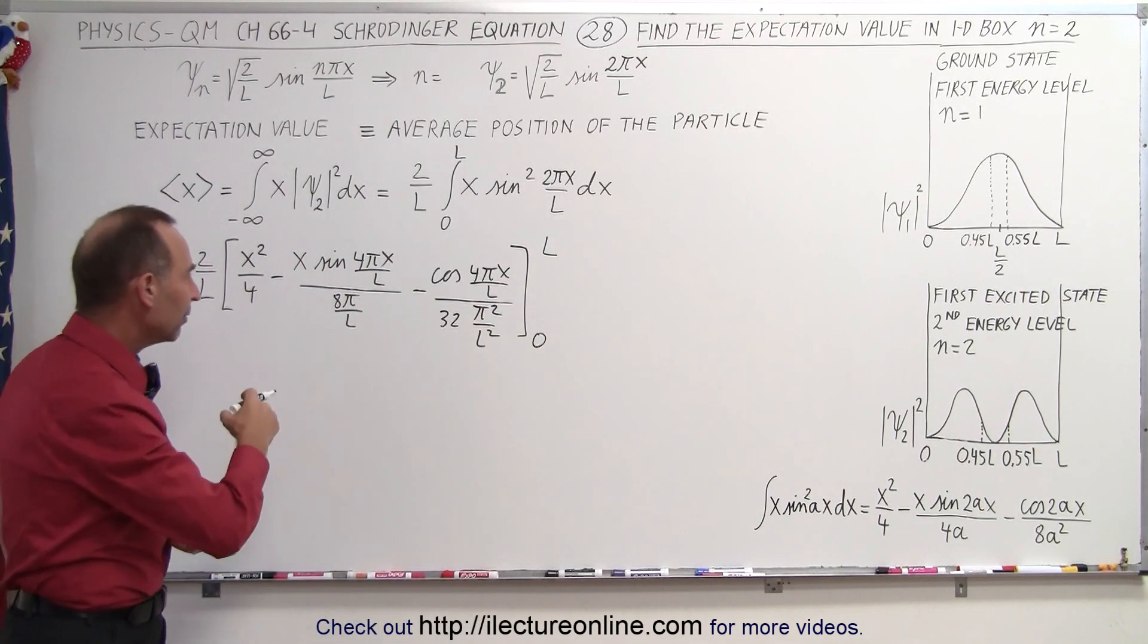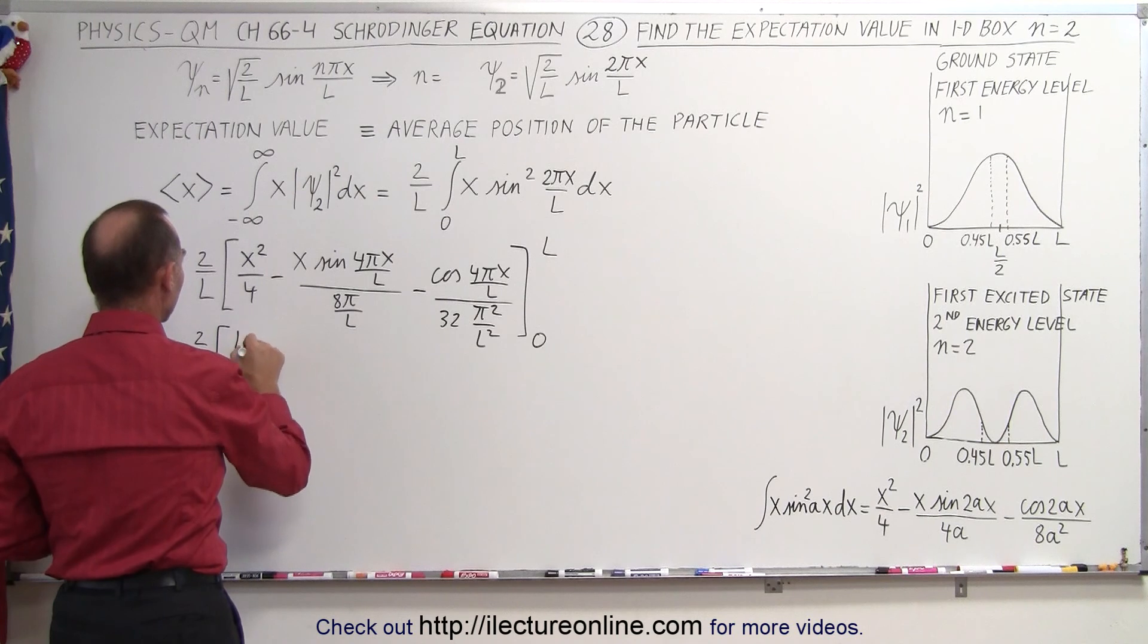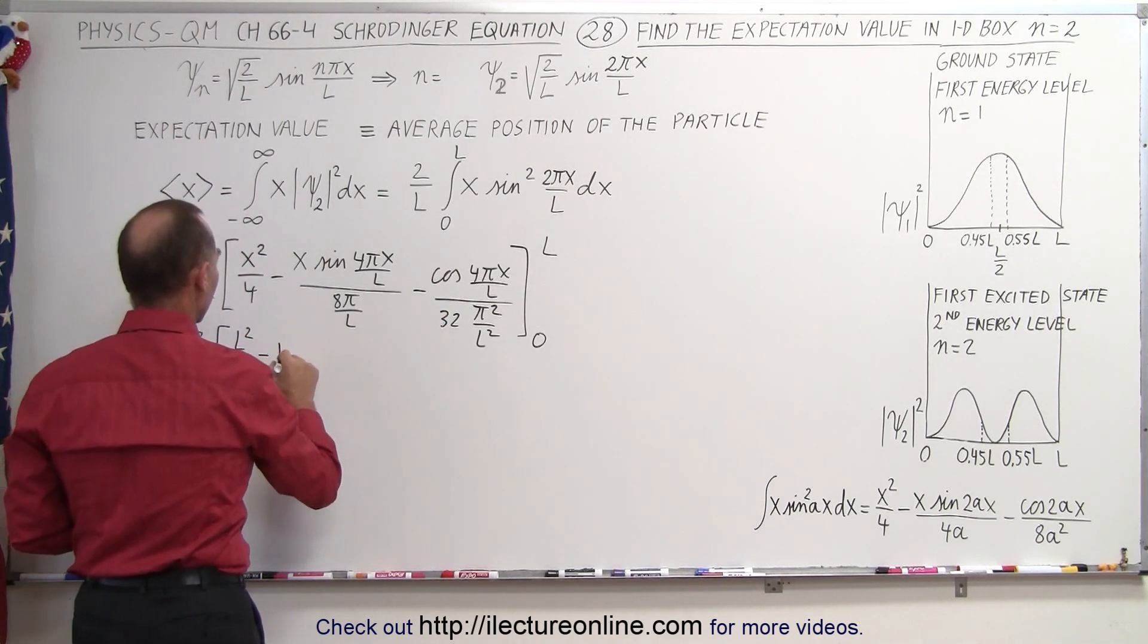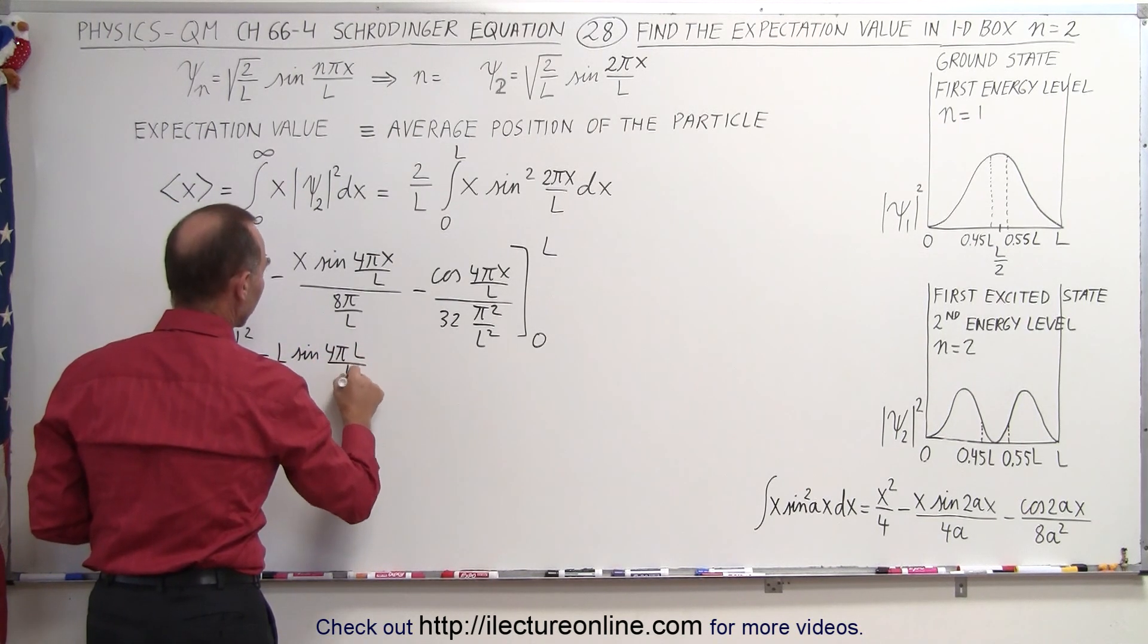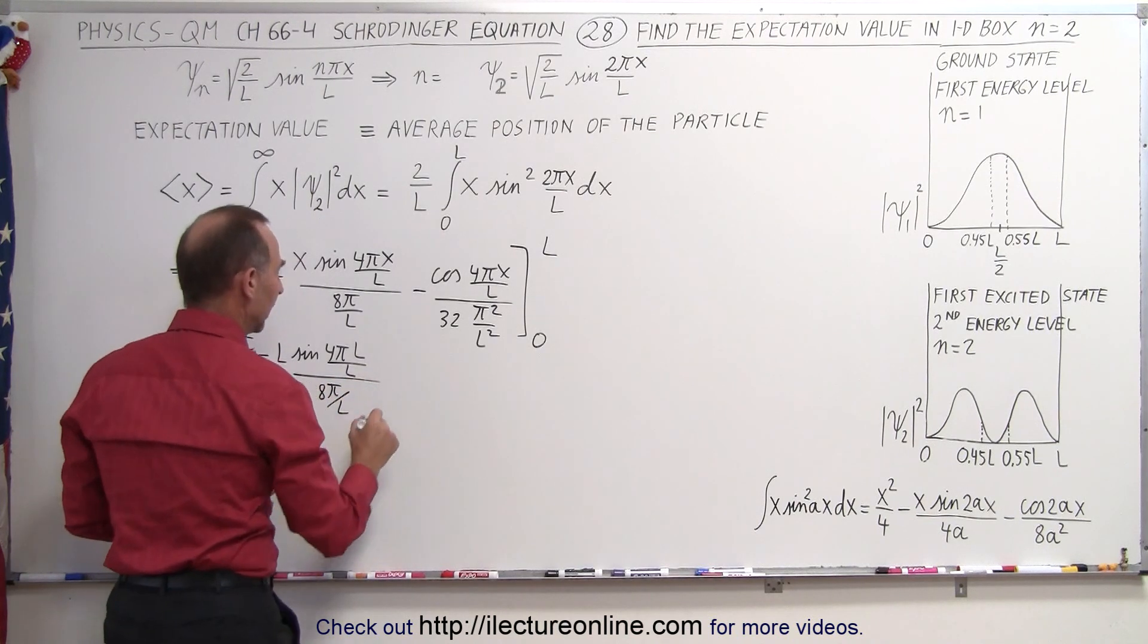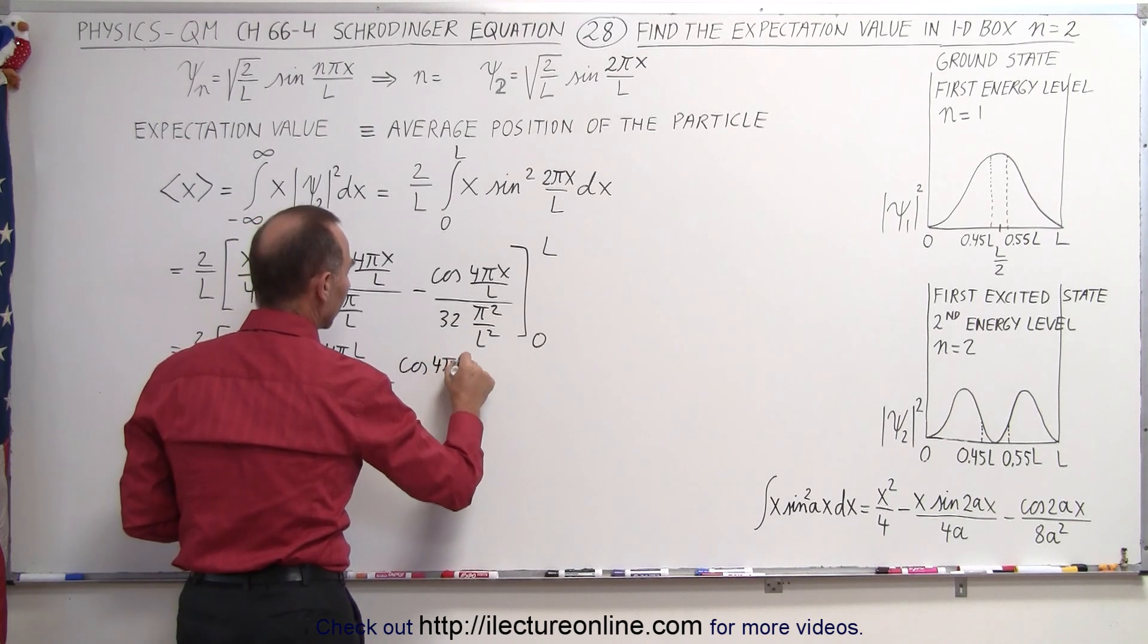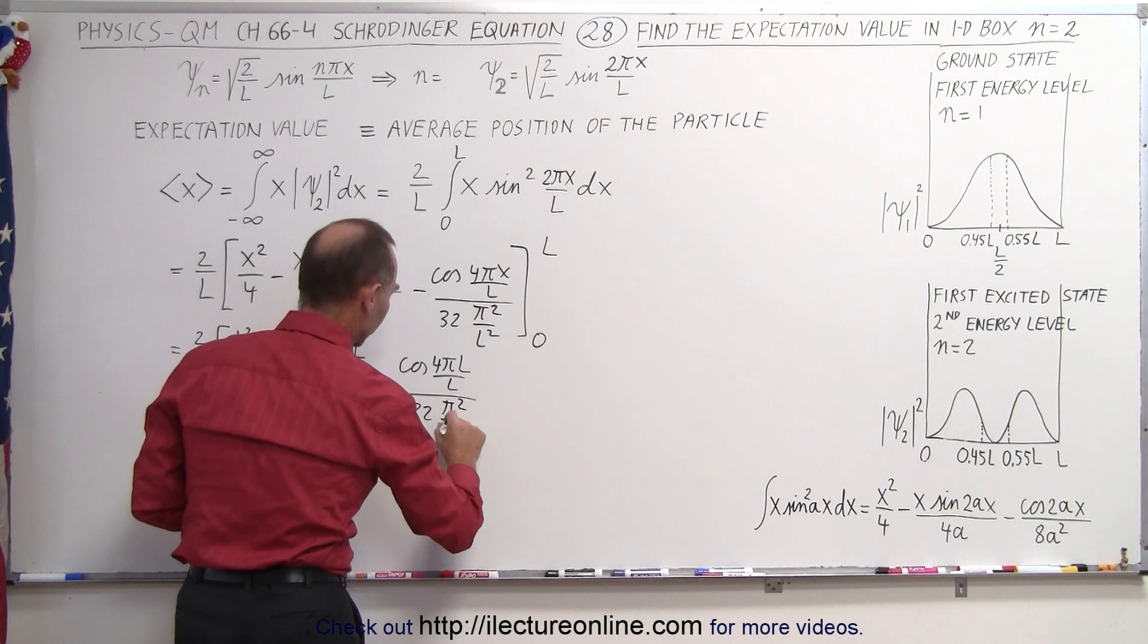Now, again, when we plug in the values, we get 2 over l times—plug in the upper limit, we get l squared over 4. Plug in the upper limit here, we get minus l times the sine of 4 pi l over l, divided by 8 pi divided by l, and then minus the cosine of 4 pi l over l, divided by 32 pi squared over l squared.